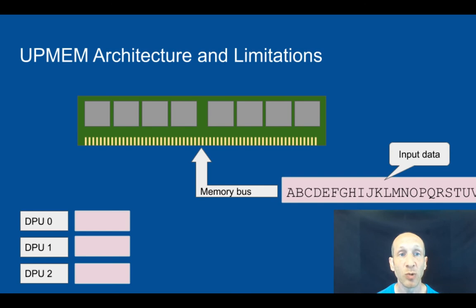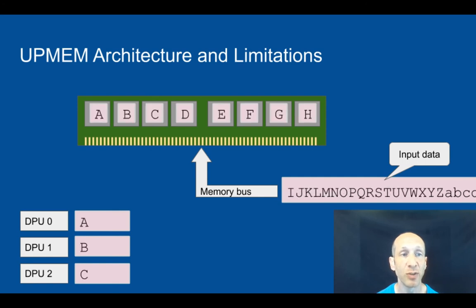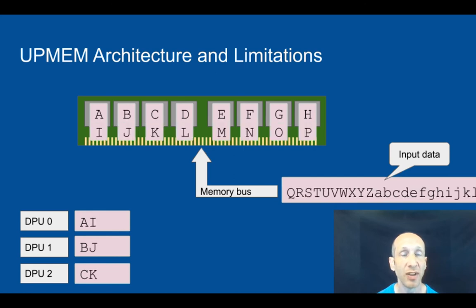Here you can see how data striping works. On the bottom right we have our input stream — basically the English alphabet. On the bottom left you can see the view each DPU sees in its physical memory. As we read bytes, every eighth byte is striped across the different banks, so each DPU sees only every eighth byte. We must therefore take care in software to transpose the data so that each DPU sees a correct, coherent view.